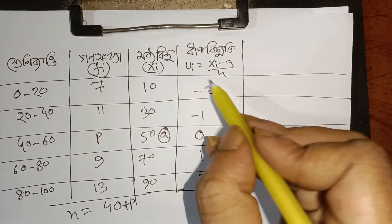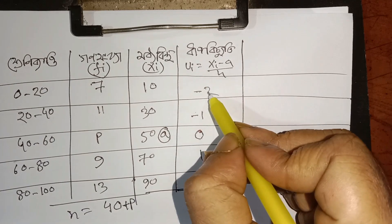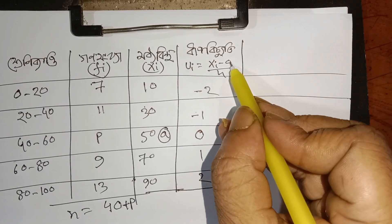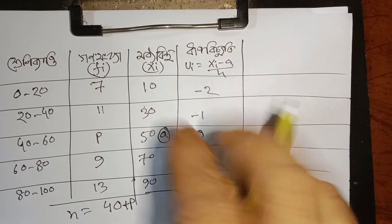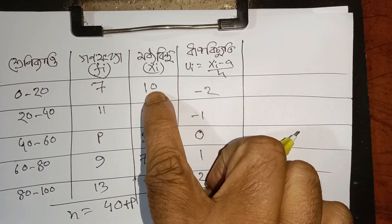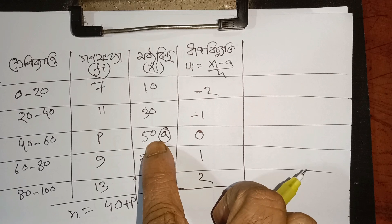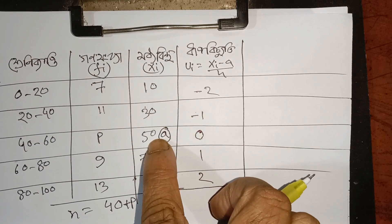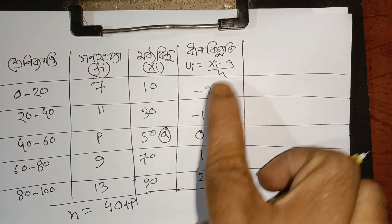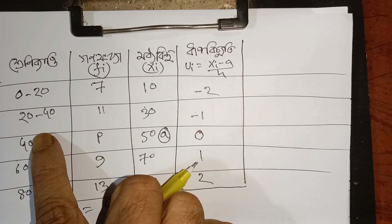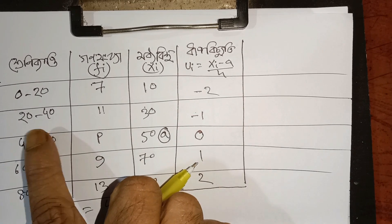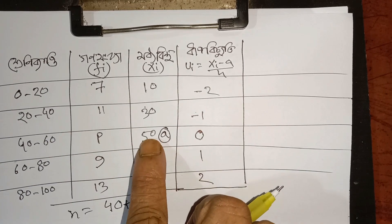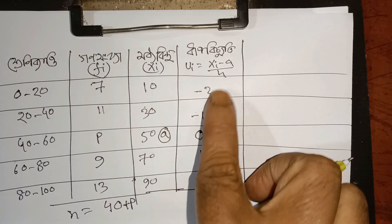We will have to write the u_i. x_i minus a. x_i minus a is equal to 10 minus a, which is equal to 50 — so 10 minus 50 is equal to minus 40. Plus h, and h is equal to 20. Minus 40 plus 2, minus 2.